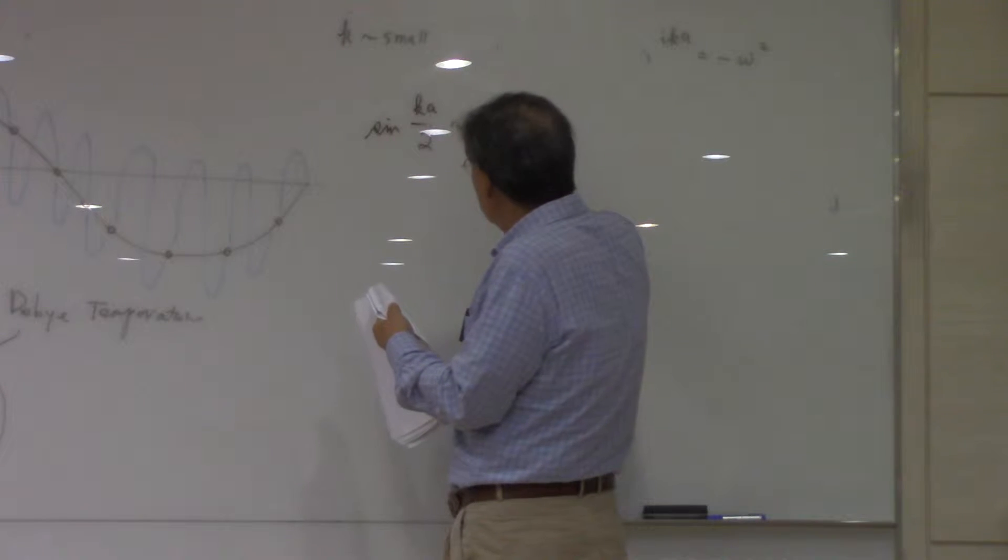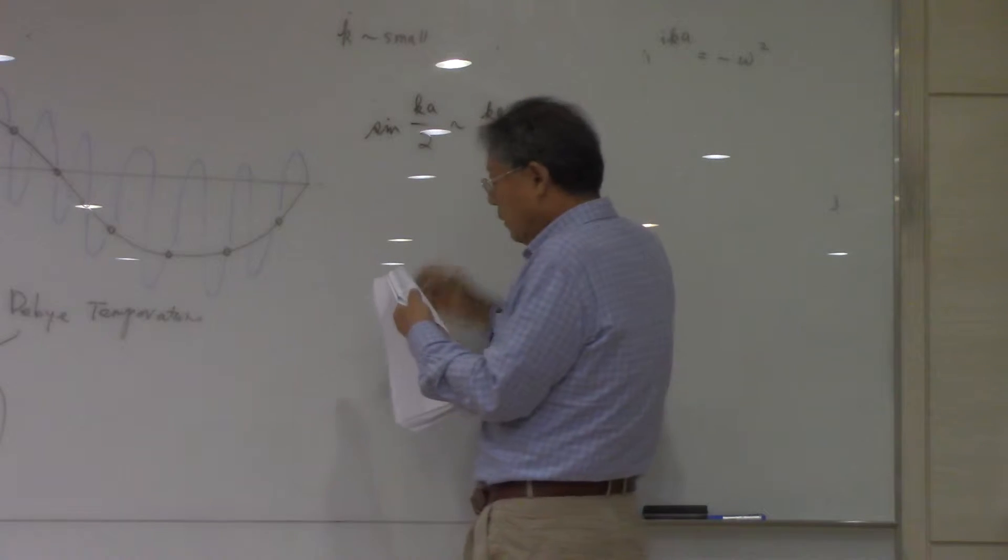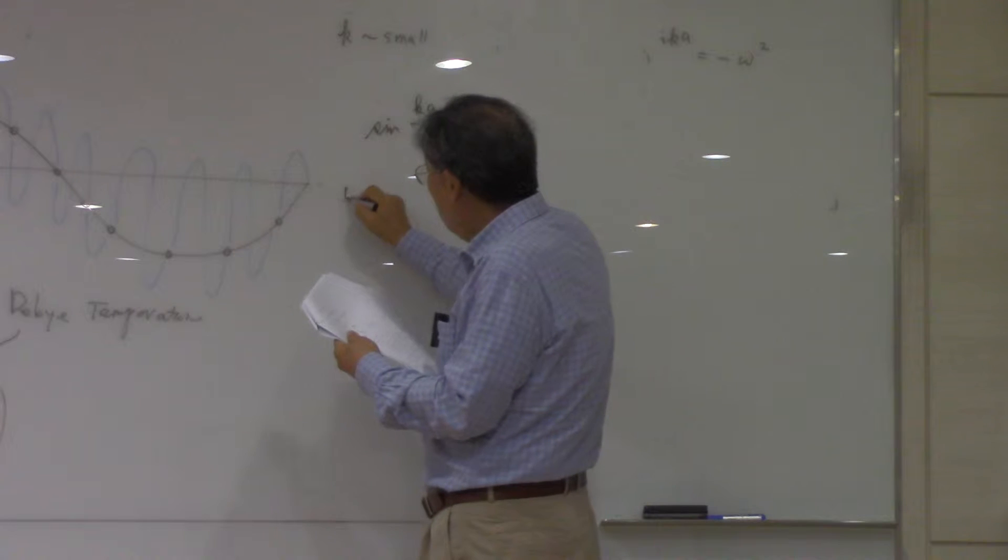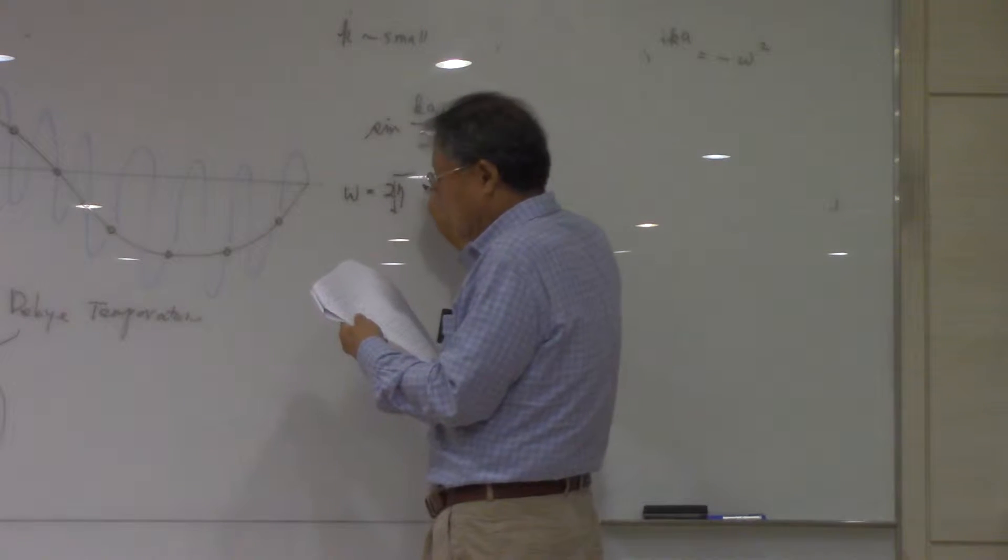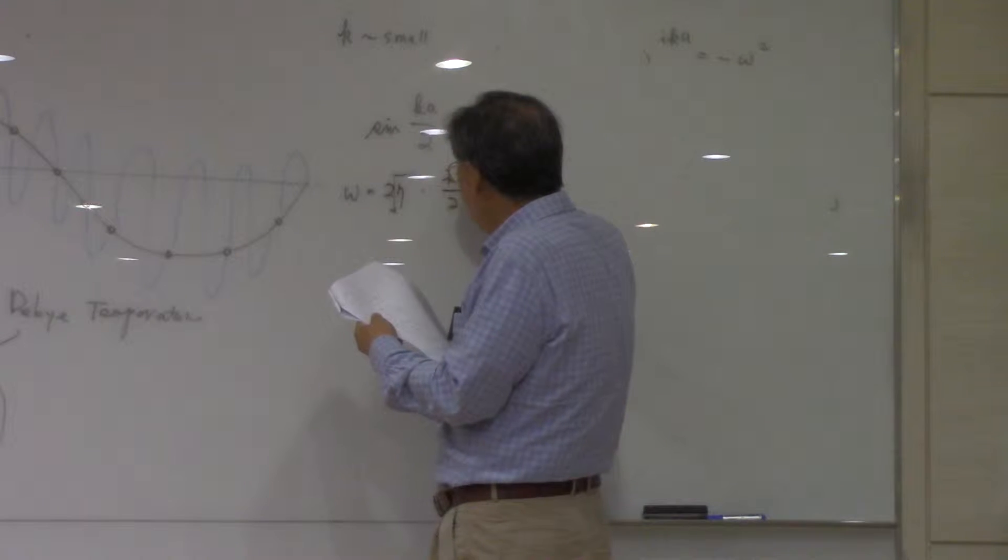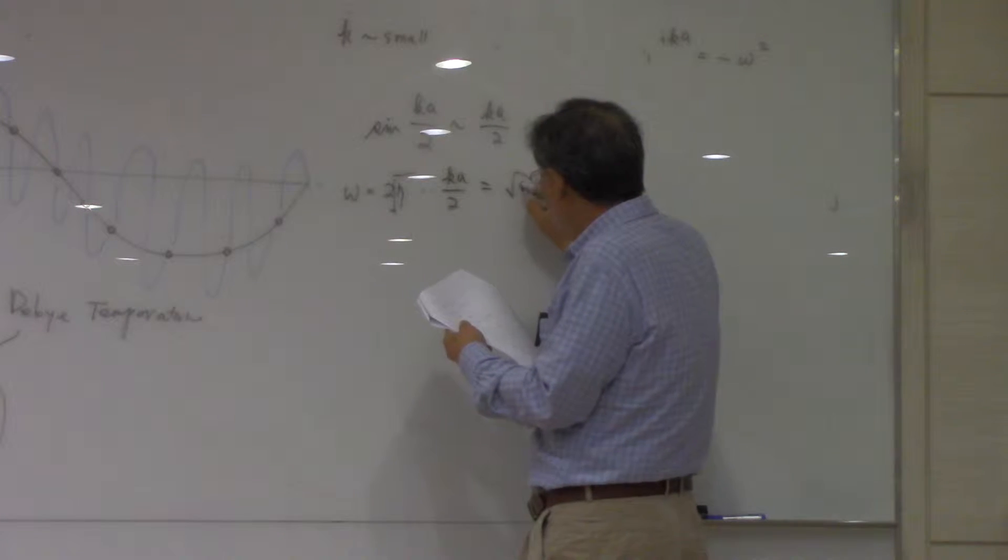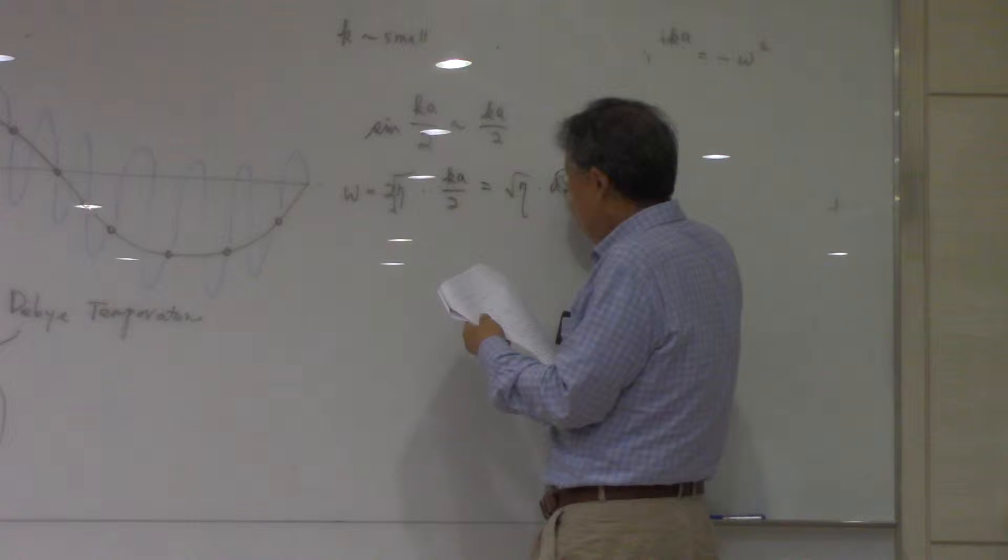Ka can be approximated as Ka over 2, so that omega now is going to be 2 eta root times 2 over Ka, so that eta Ak.